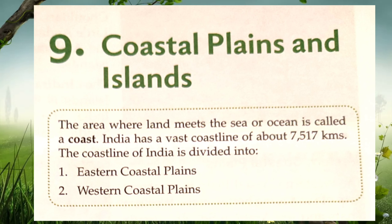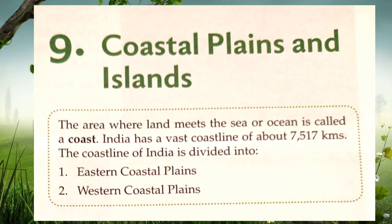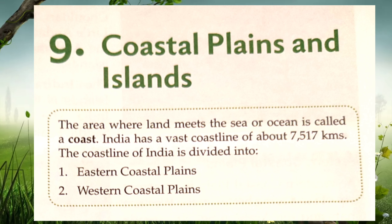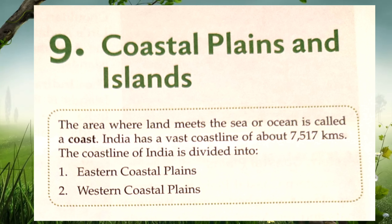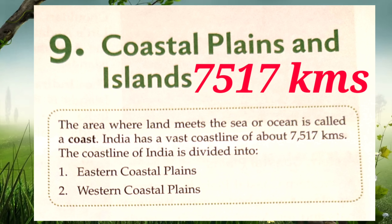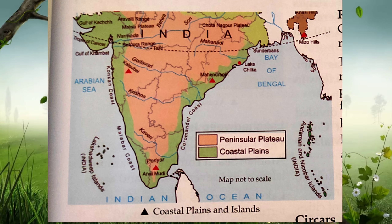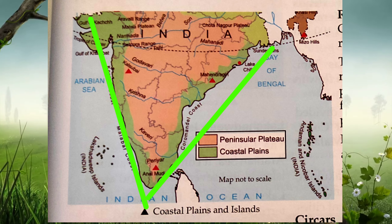Good morning dear students. Today we are going to discuss about a new chapter: Coastal Plains and Islands. It is the ninth chapter of your textbook. The area where land meets the sea or ocean is called a coast. India has a vast coastline of about 7,517 kilometers. The coastline of India is divided into Eastern coastal plains and Western coastal plains.